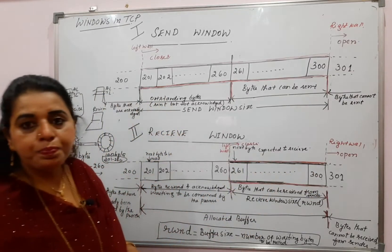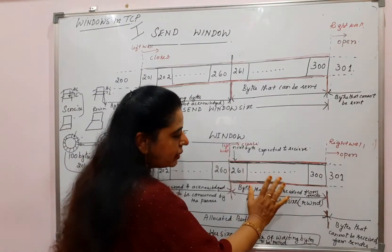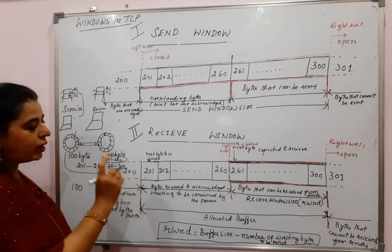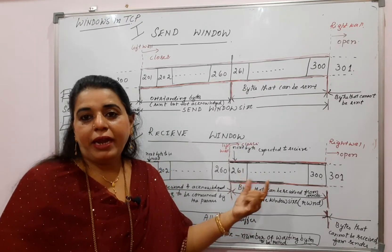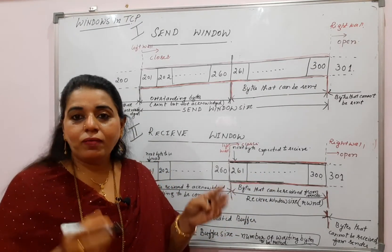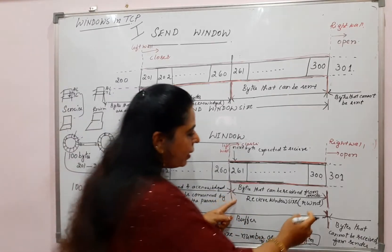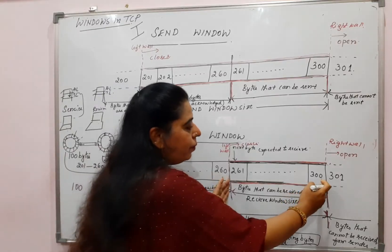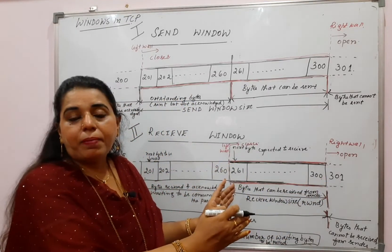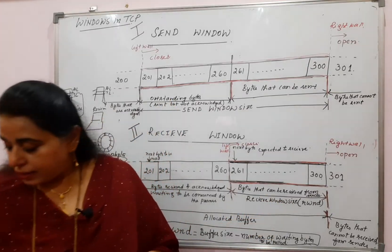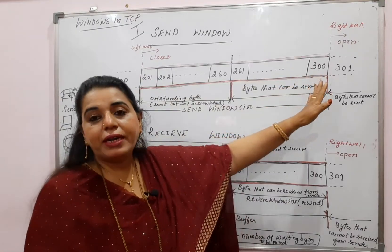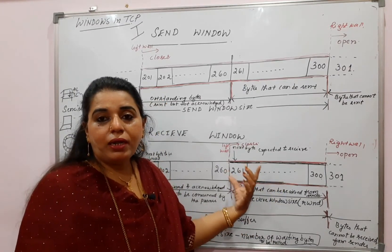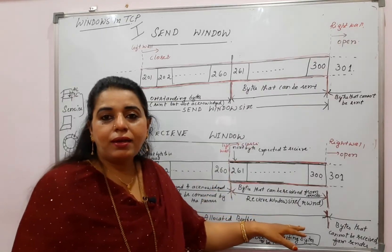What about 261 to 300? These are bytes that can be received — they are empty locations from 261 to 300. So 40 locations are still available with the receiver; it can receive another 40 bytes. Whatever is the capacity to receive bytes, that becomes the receive window size. Here you have to be very careful: not the entire allocated buffer is the receive window size — only the empty locations. That capacity is what the receiver can still receive, and that becomes the receive window size.